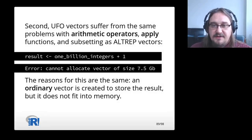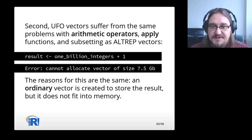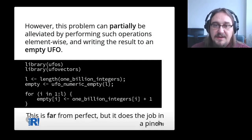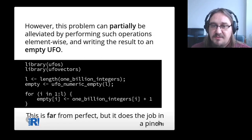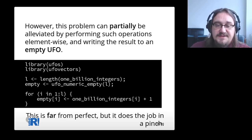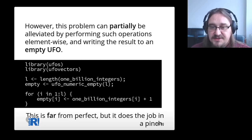Second, UFOs suffer from the same problems with arithmetic operators, apply functions, and subsetting as Altrep vectors. If you try to add 1 to 1 billion integers, you will also get an error. The reasons for this are the same. An ordinary vector is created to store the result, but it does not fit into memory. However, this problem can be partially alleviated by performing such operations element-wise and writing the result to an empty UFO. Now, this is far from perfect, but it does the job in a pinch.